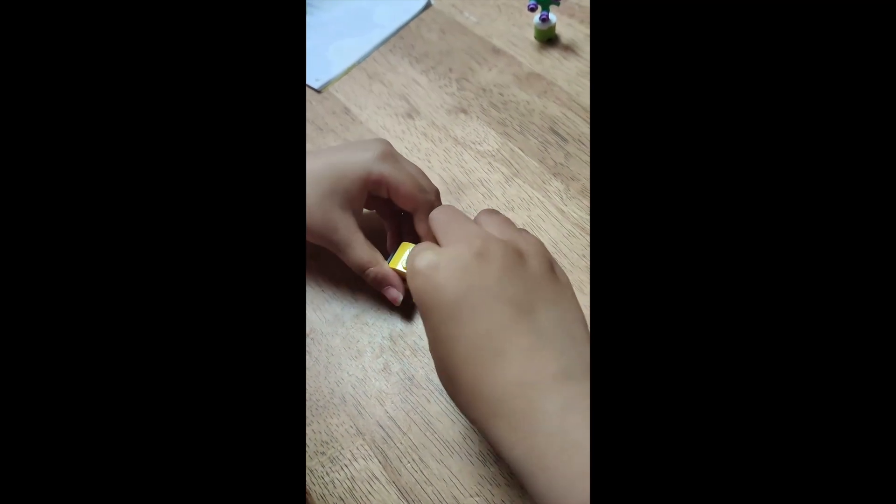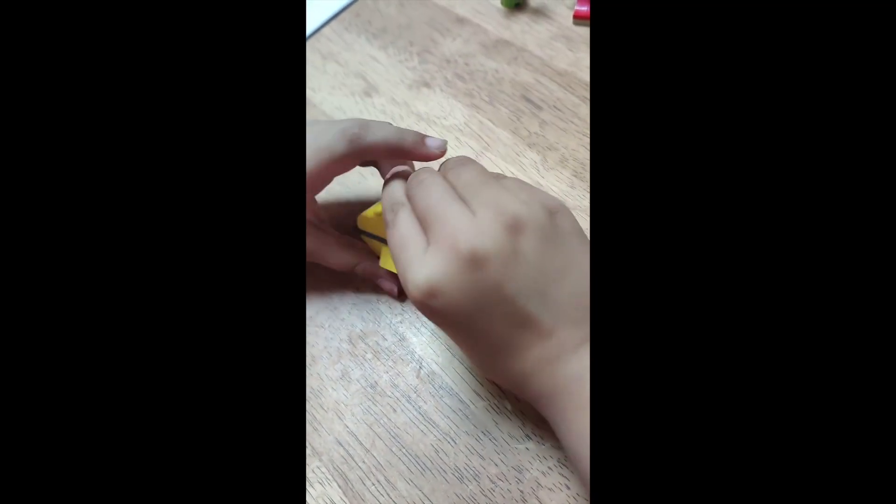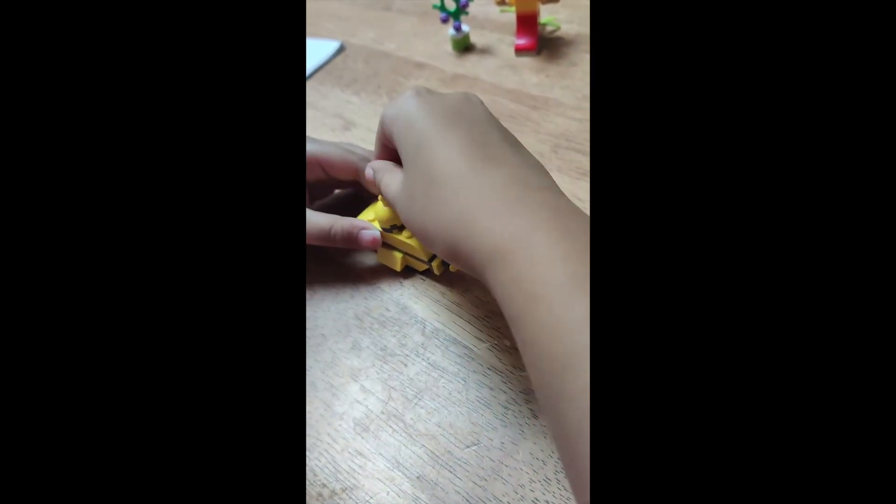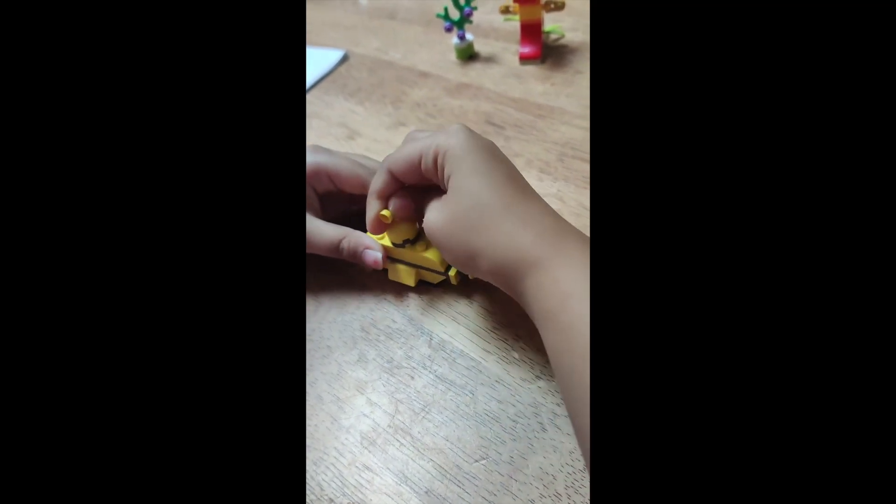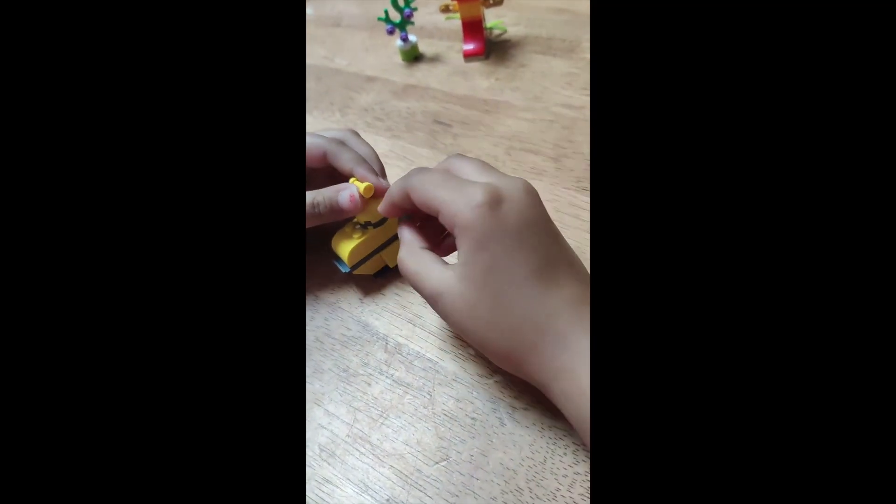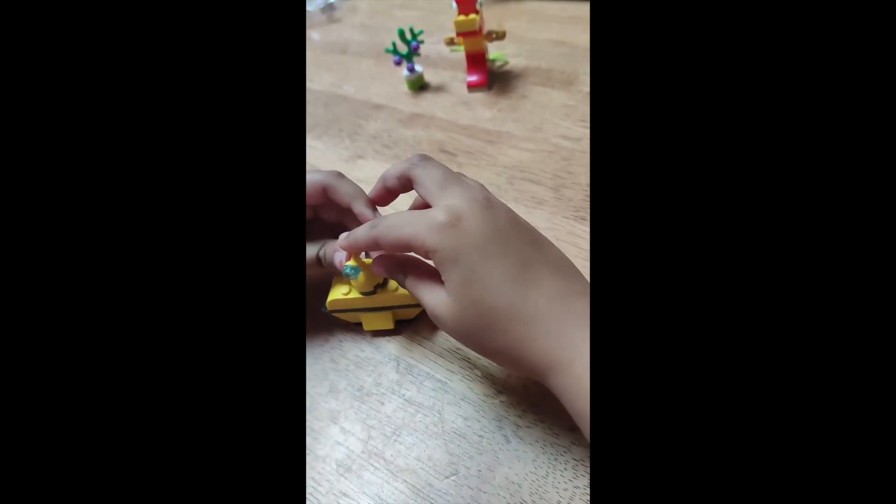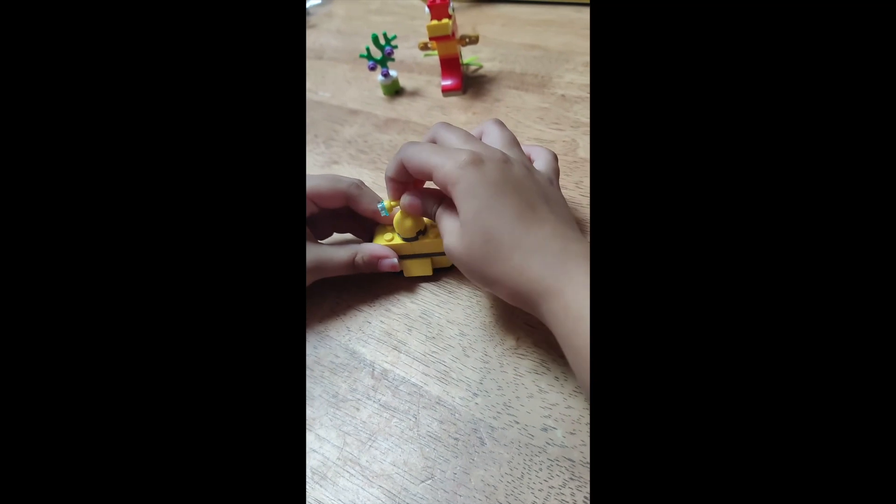Then we put this gray piece, then this yellow piece on top. Now we are going to do the light. So we start off with this piece like this, put it on. Now we do the blue piece. It's a submarine.